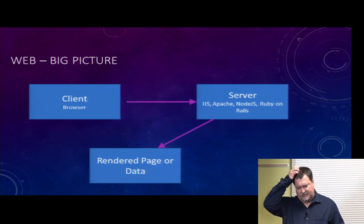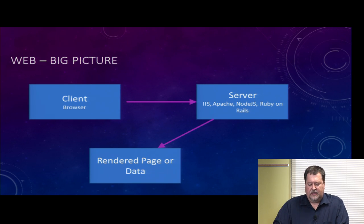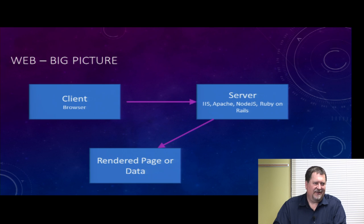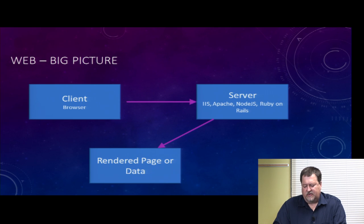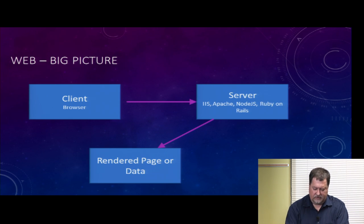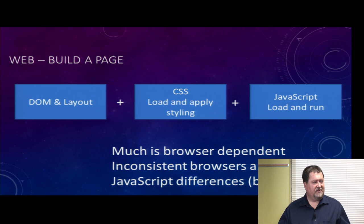Web junk — the big picture. Client is where our JavaScript is going to reside, and we normally do a request to the server. The server makes a web response and dumps out XML or JSON or something. There are lots of different server approaches. The one I'm used to is MVC on IIS. But you get a rendered page or data back, and then the DOM comes into play.